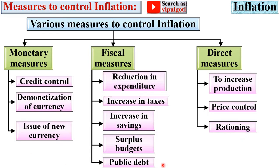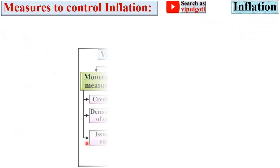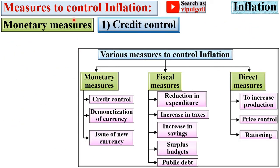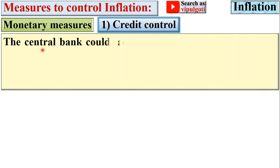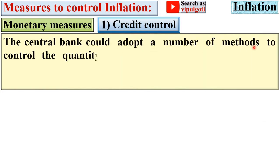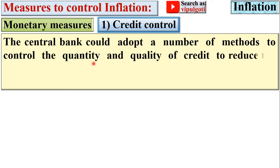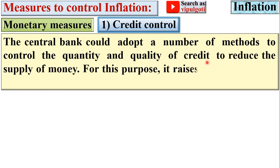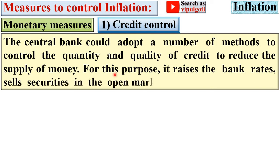Now let's see each measure one by one briefly. Under monetary policy, the first subtopic is credit control. The central bank adopts a number of methods to control the quantity and quality of credit to reduce the supply of money — for example, raising the bank rate, selling securities in the open market, and raising the reserve ratio.